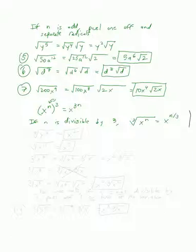For example, the cube root of x to the sixth: since 6 is divisible by 3, you just get x squared. Another example: cube root of x to the fifteenth. Since 15 is divisible by 3, you get x to the fifth.